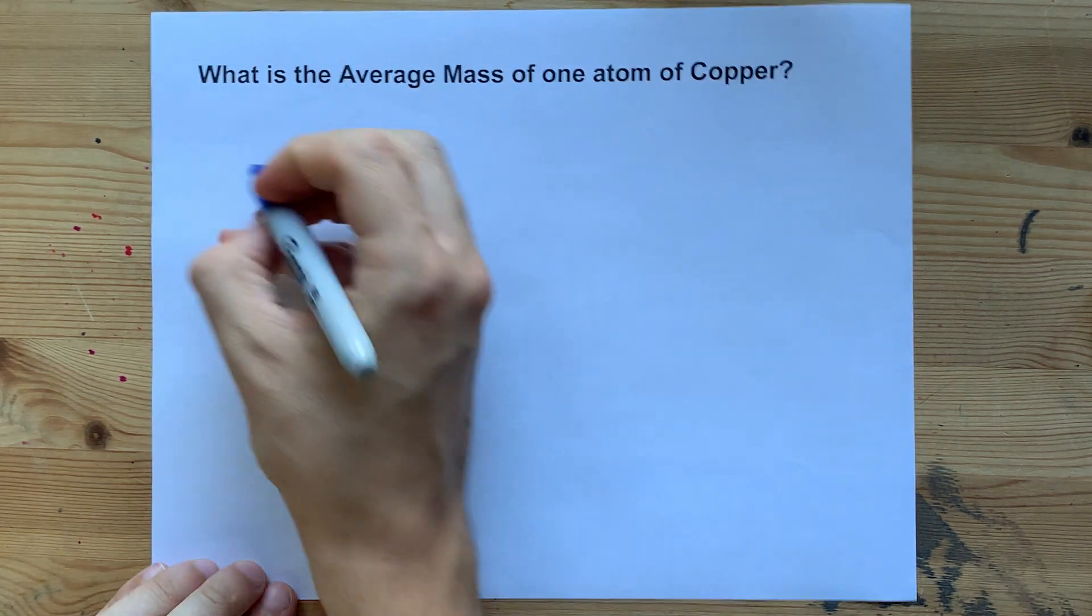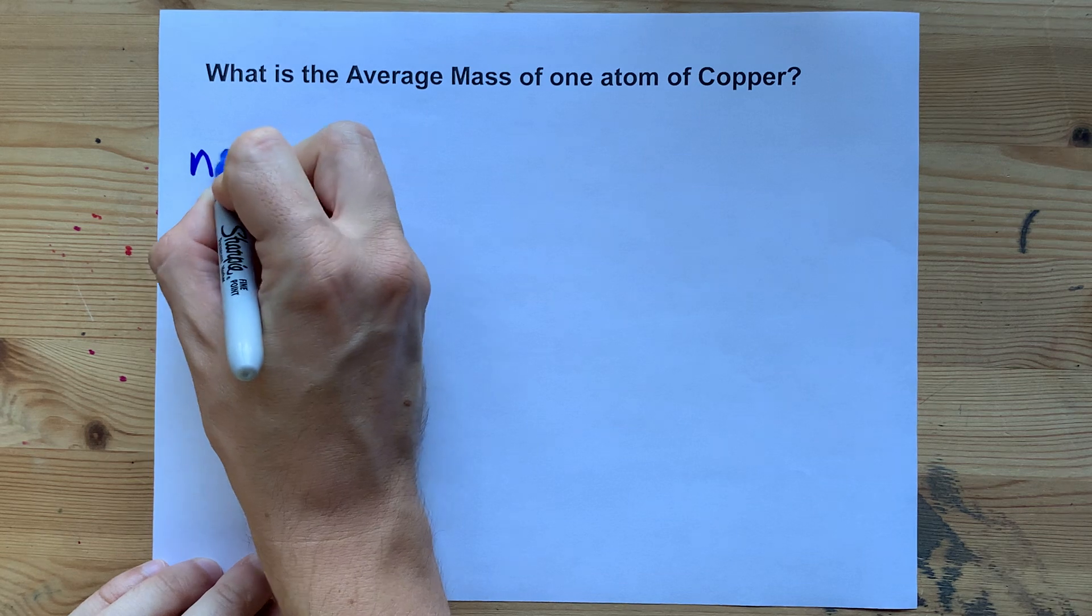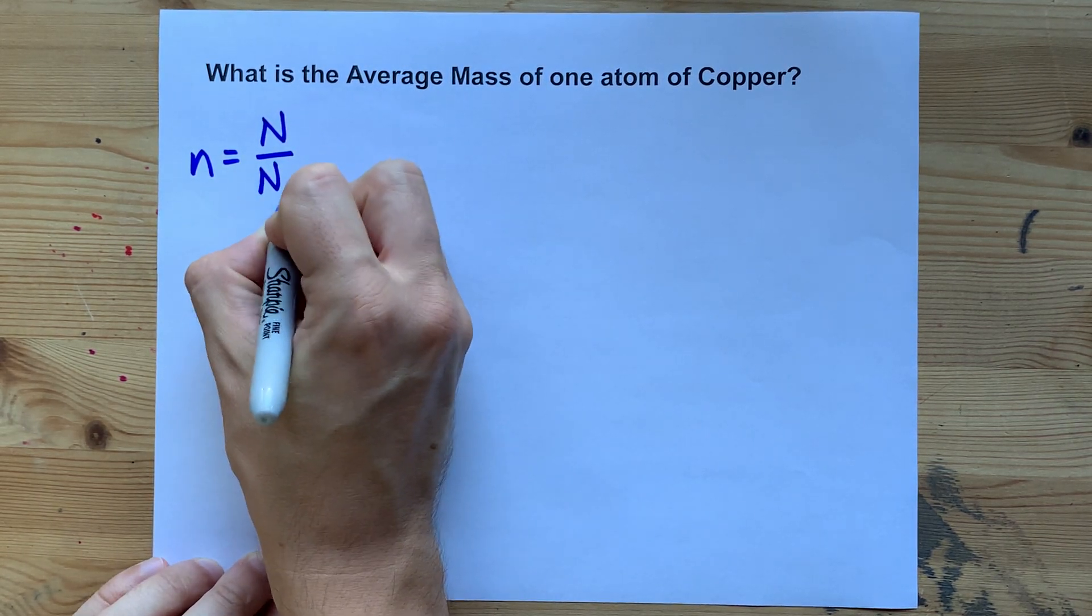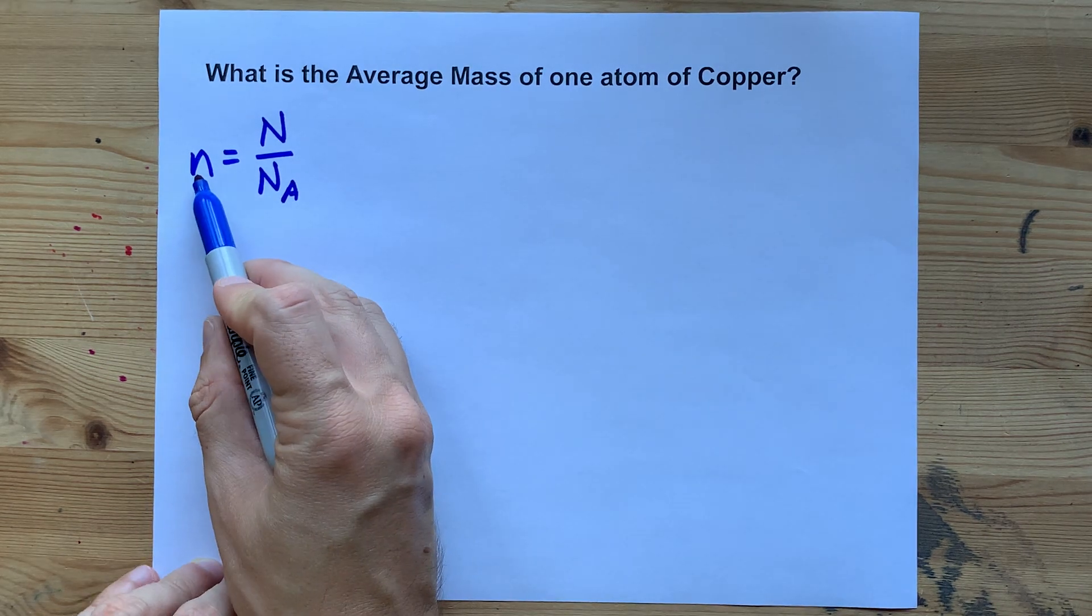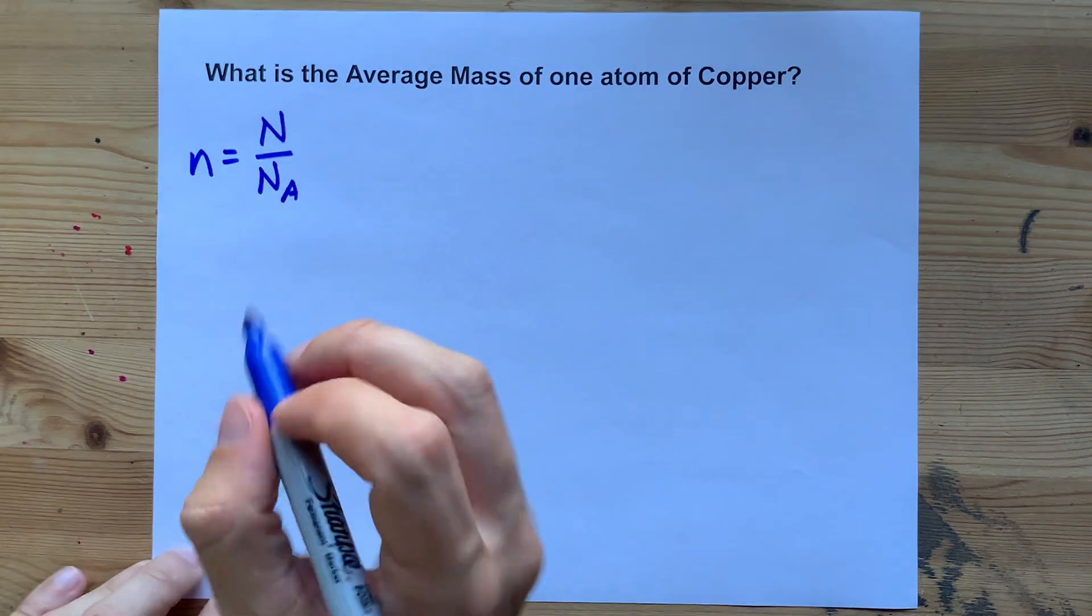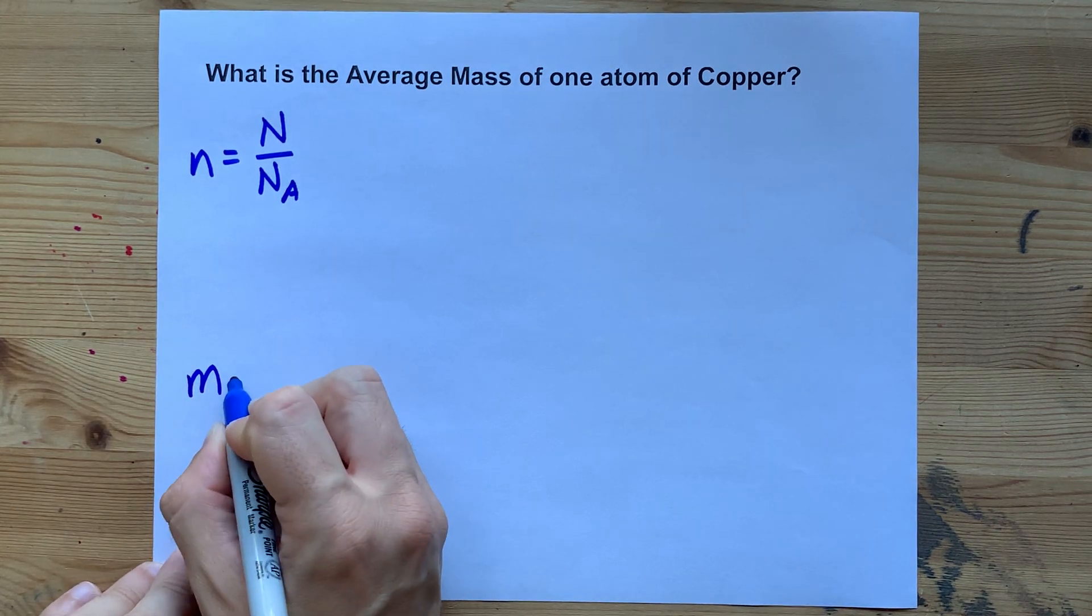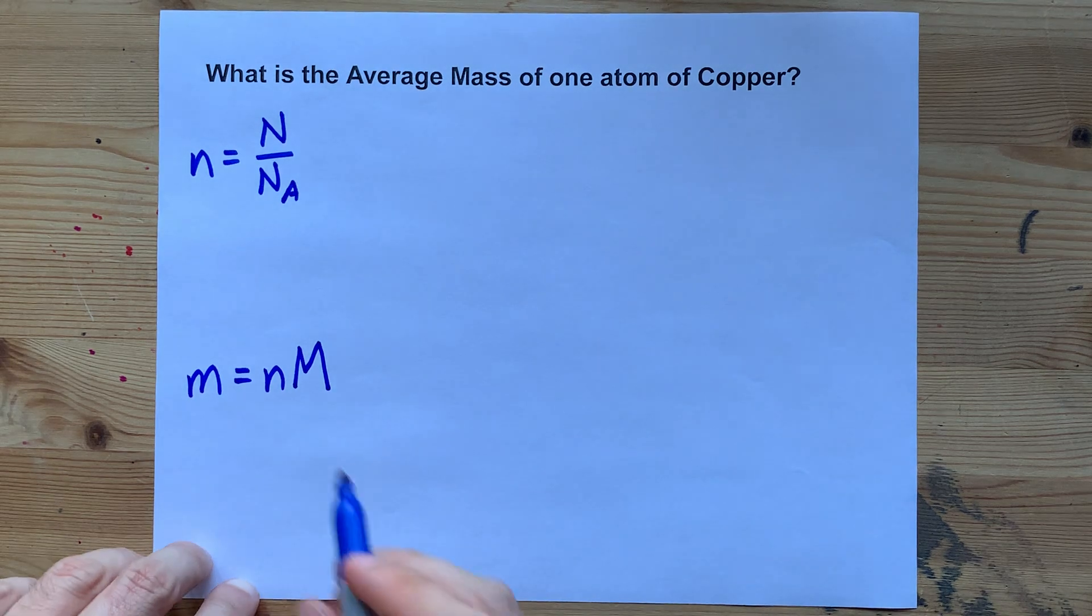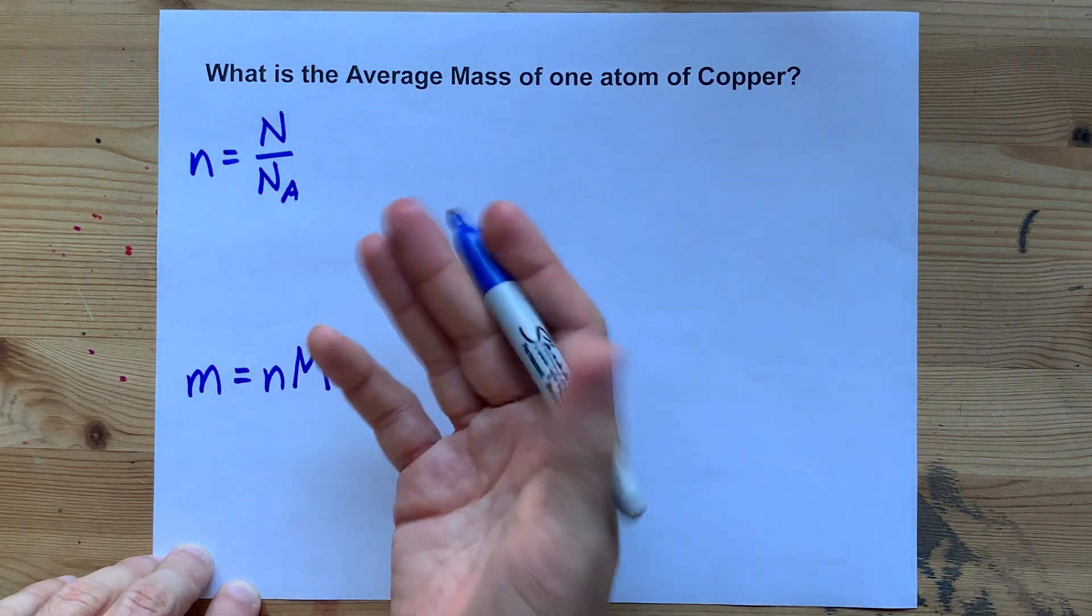You can always convert a number of atoms into a number of moles by taking the number of particles and dividing it by Avogadro's number. That will give you the number of moles that there are in the sample. Then you can convert a number of moles into mass by multiplying number of moles by molar mass, like the mass of one mole.